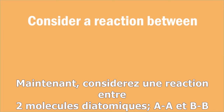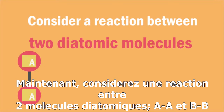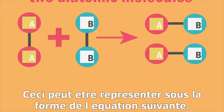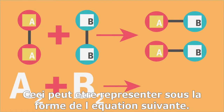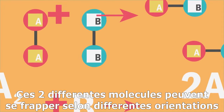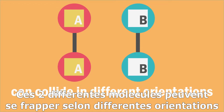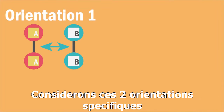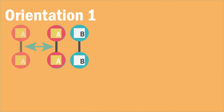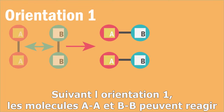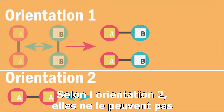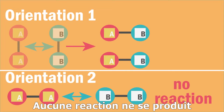Now consider a reaction between two diatomic molecules, A2 and B2, to give two molecules of AB. This can be represented by the equation. These two diatomic molecules can collide in many different orientations, but consider the two orientations here. In orientation 1, the two diatomic molecules, A2 and B2, are in the correct orientation to react. In orientation 2, they are not, and so no reaction occurs.